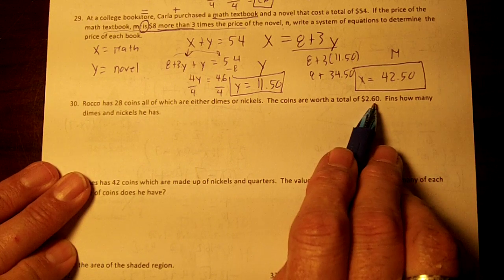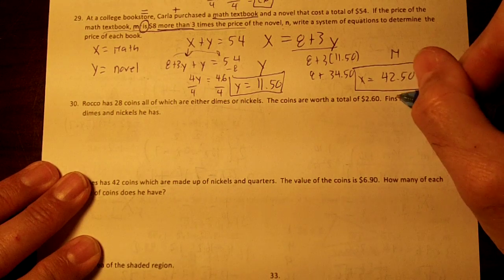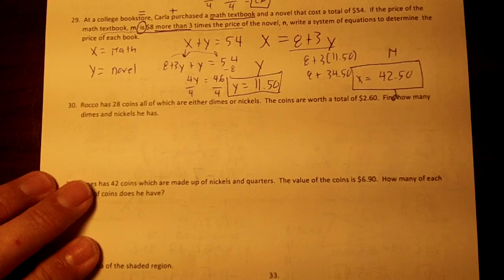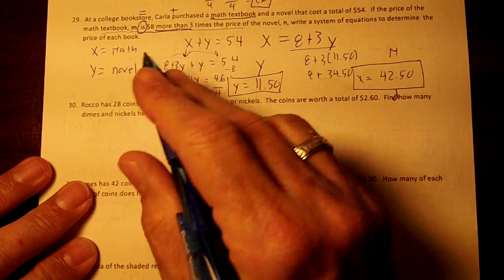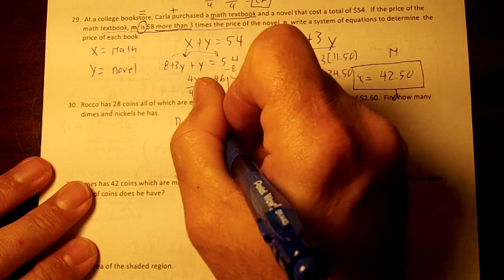He is rich. Find, that shouldn't be fins, find how many dimes and nickels he has. So let's use D and N. We know he has 28 coins, so N plus D equals 28.